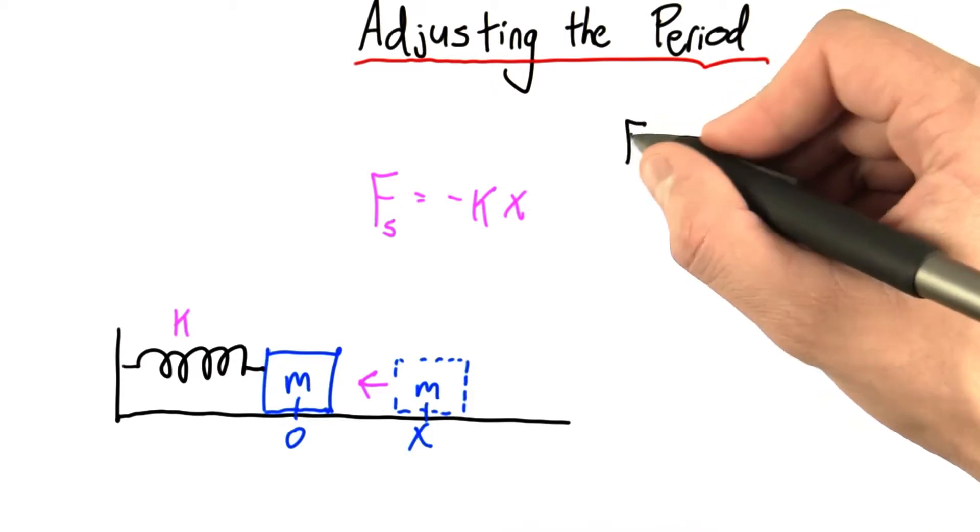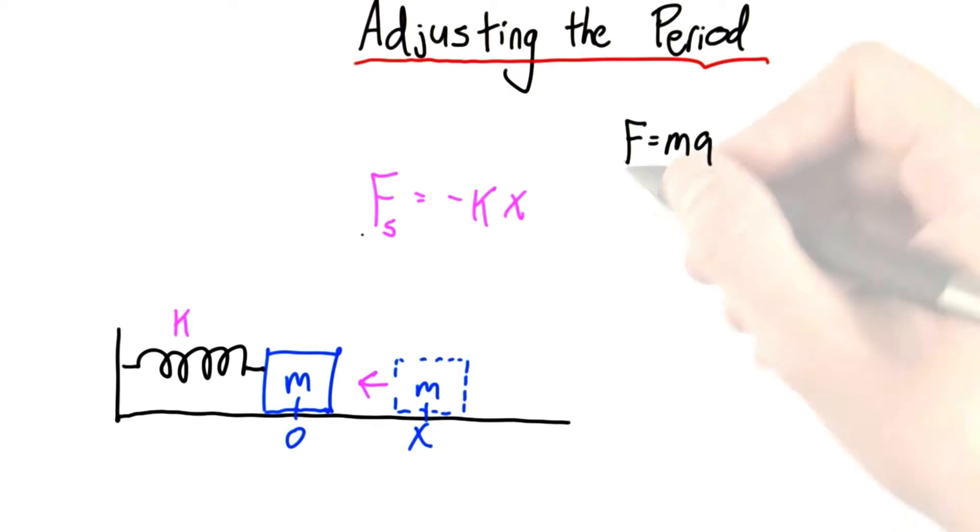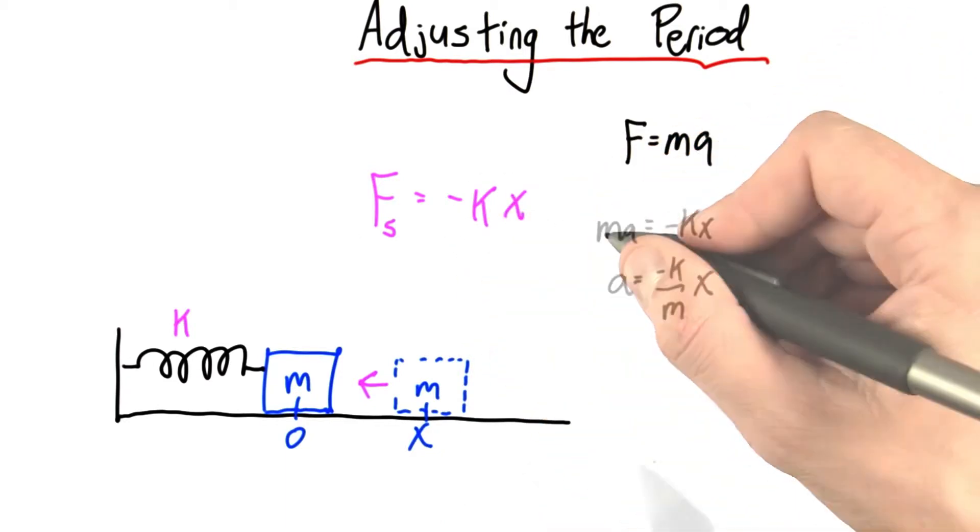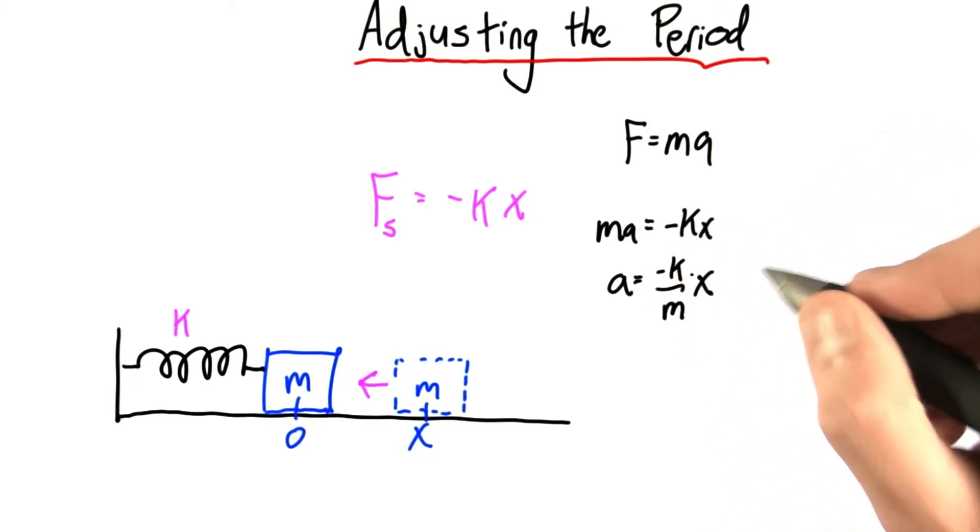And we know from our good buddy Newton that forces cause accelerations. In this case, the spring will accelerate this way due to this spring force. So why don't we replace this F with this minus kx? Well in that case, we get ma equals minus kx. And so a equals negative k over m times x.